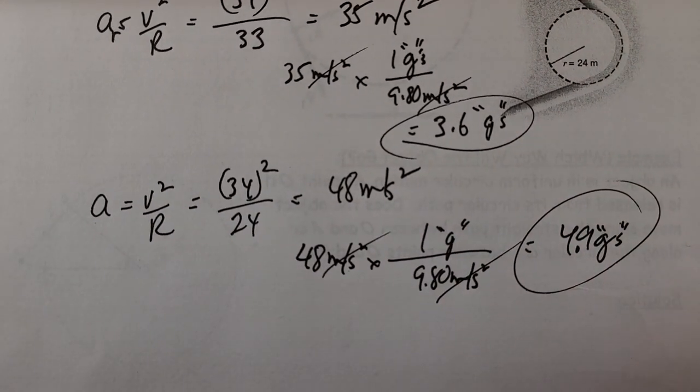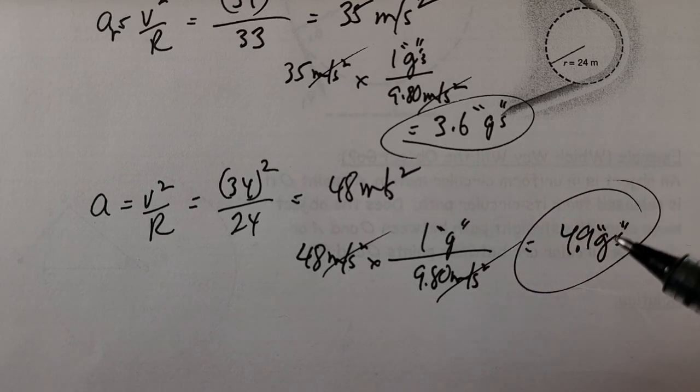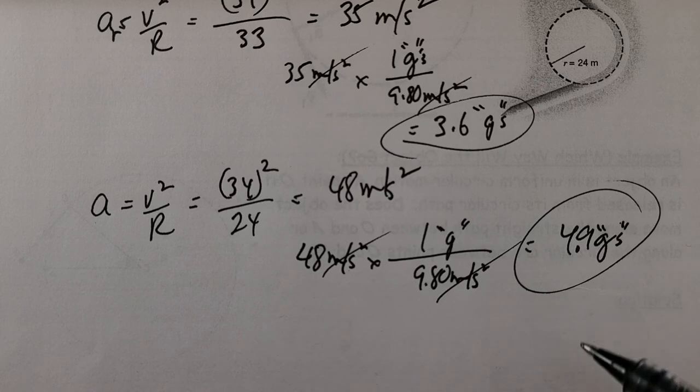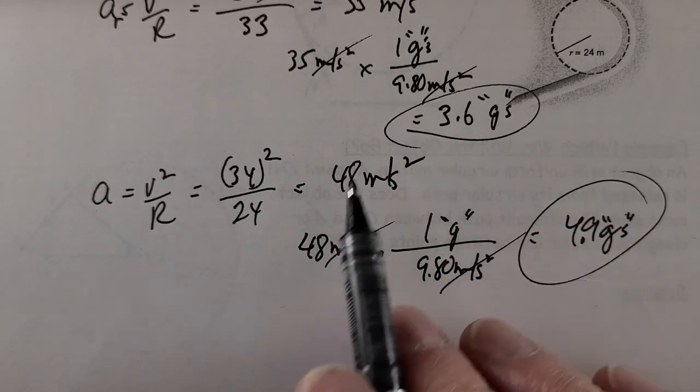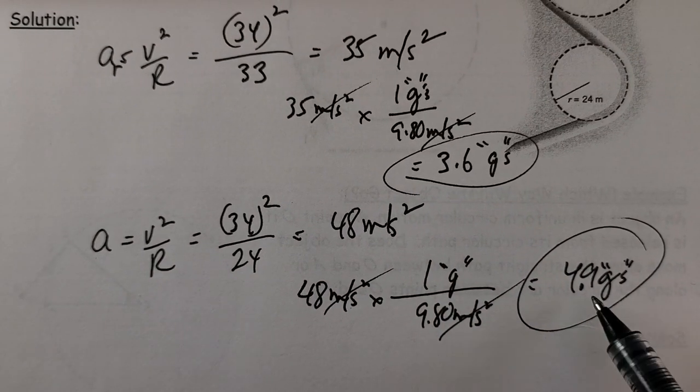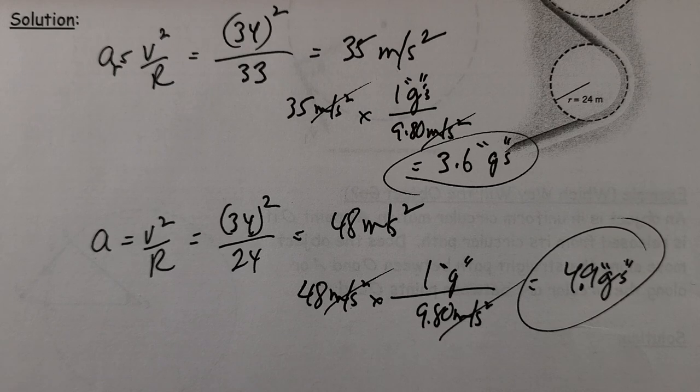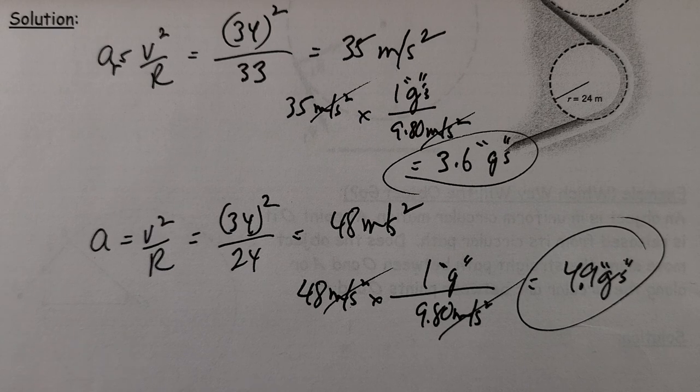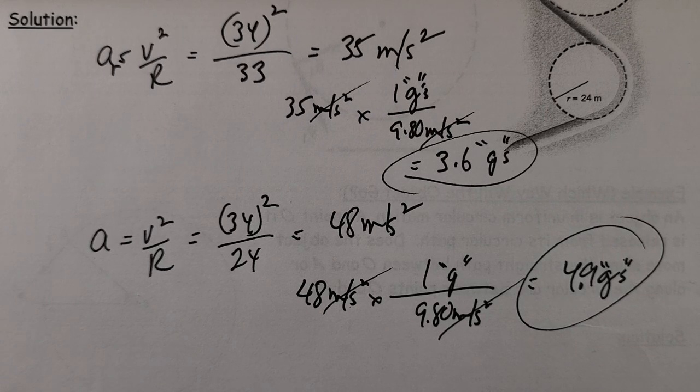Right now you feel the effect of 9.8 or of 1g, which is 9.8 meters per second. But take that, multiply it by 3.6 or 4.9. These are the forces that you would feel associated with these higher numbers. So you should be able to do the assignment now. That'll be the end of FM 1.9, and we'll see you again.